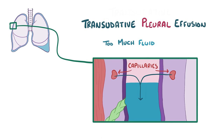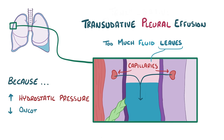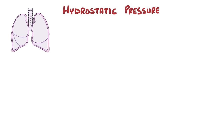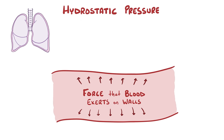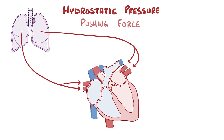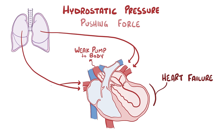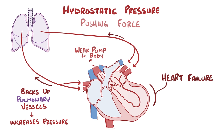A transudative pleural effusion happens when too much fluid starts to leave the capillaries, either because of increased hydrostatic pressure or decreased oncotic pressure in the blood vessels. Hydrostatic pressure is what we normally think of as blood pressure — the force that blood exerts on the walls of the blood vessel. A common cause of increased hydrostatic pressure in the lung capillaries is heart failure. When the heart can't effectively pump blood to the body, it backs up into the pulmonary vessels, causing blood pressure in those vessels to rise and forcing fluid out of the capillaries and into the pleural space.